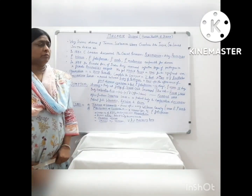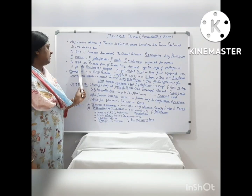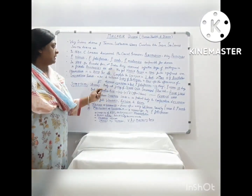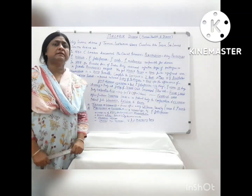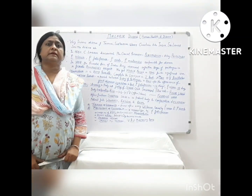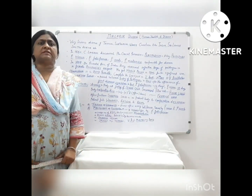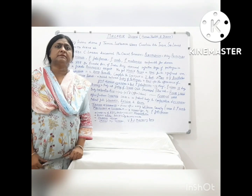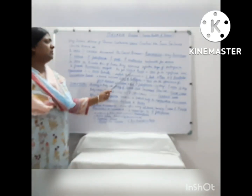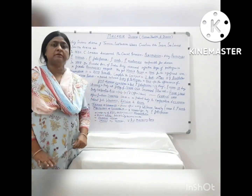In 1897, a doctor from the Indian Army named Ronald Ross discovered different infective stages in female Anopheles mosquitoes, which cause the disease. He was later awarded the Nobel Prize in 1902 for his significant work.